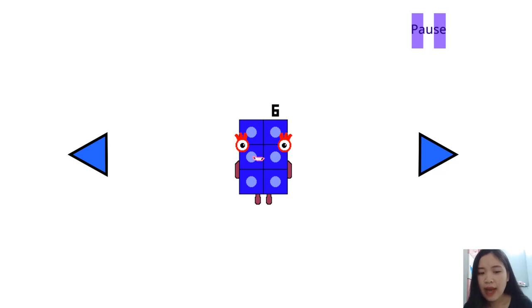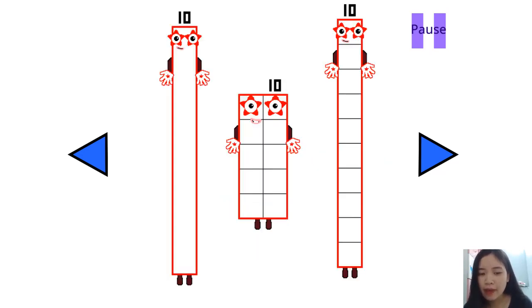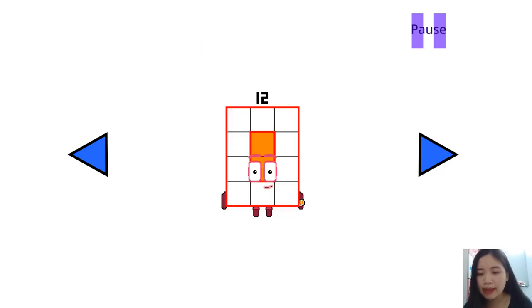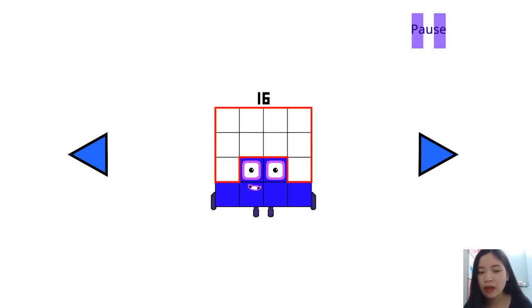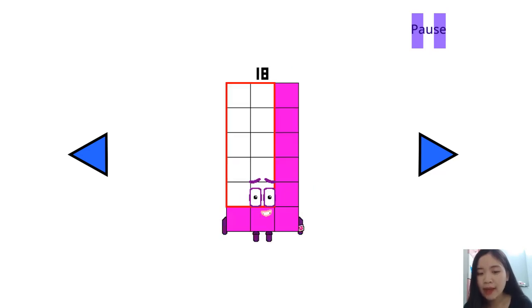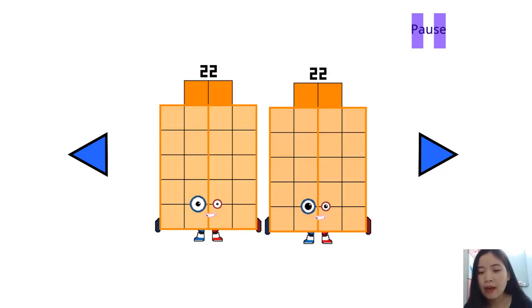I am the four times table, calling all fours, all fours, to the dance floor. Four on the floor, and one more four than the four before. That's what four's a four, to get funky on the dance floor.